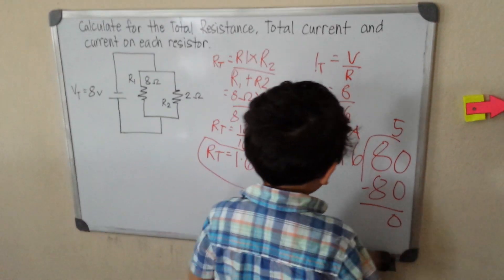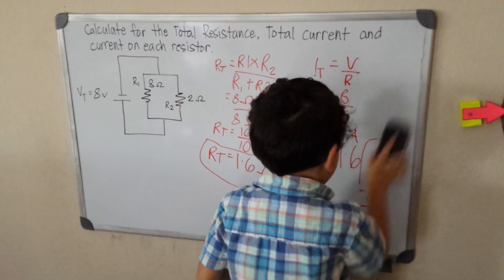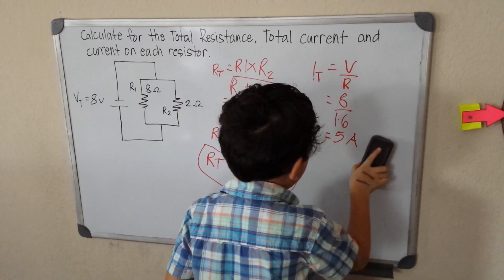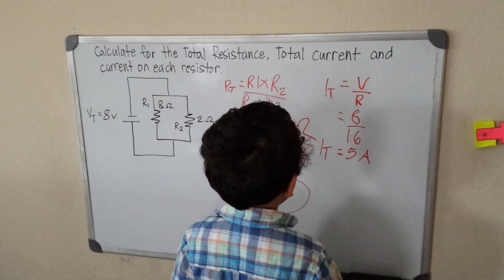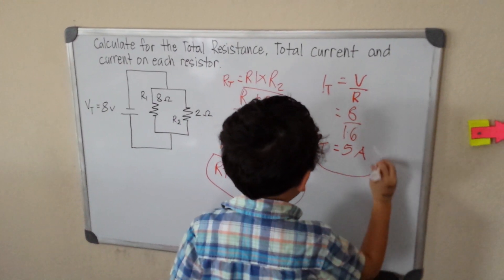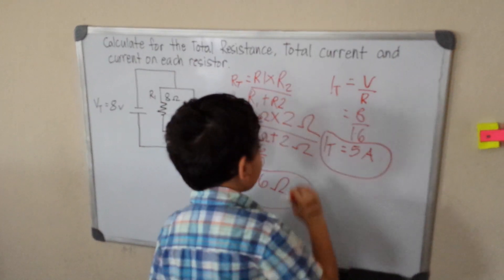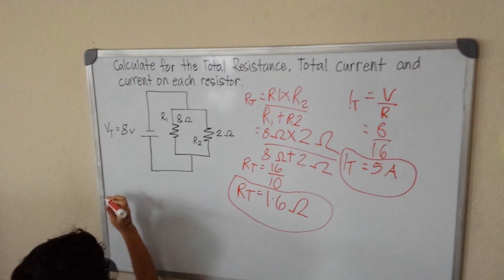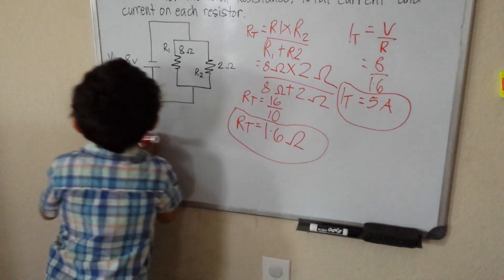And then after I erase it, I will circle it. Erase the color, and neatly. And then I will circle it. Or you can mark it in two.